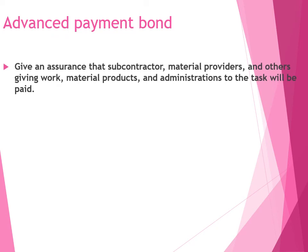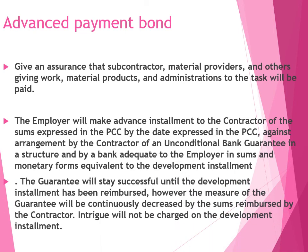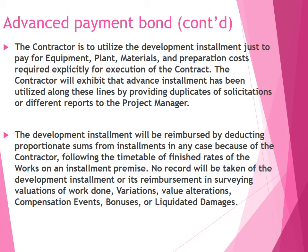Advance payment bond gives an assurance to the contractor, material providers, and other parties giving work that they will be paid. The employer will make an advance installment to the contractor of the sum specified in the PCC, against arrangement by the contractor of an unconditional bank guarantee in a structure run by a bank acceptable to the employer, in amounts and currencies equivalent to the advance payment. The contractor will utilize the advance payment only to pay for equipment, plant, material, and preparation costs required for executing the project.